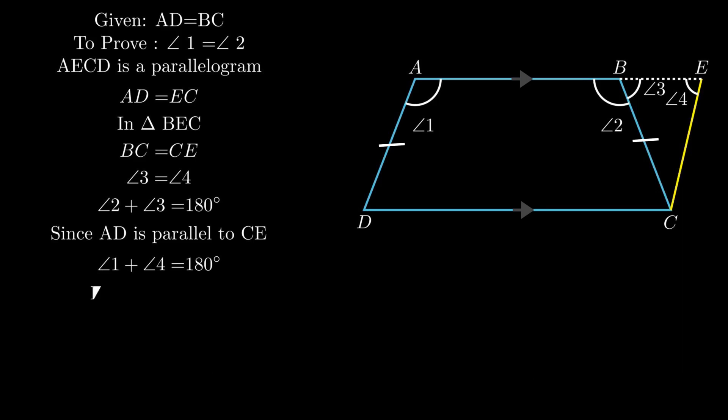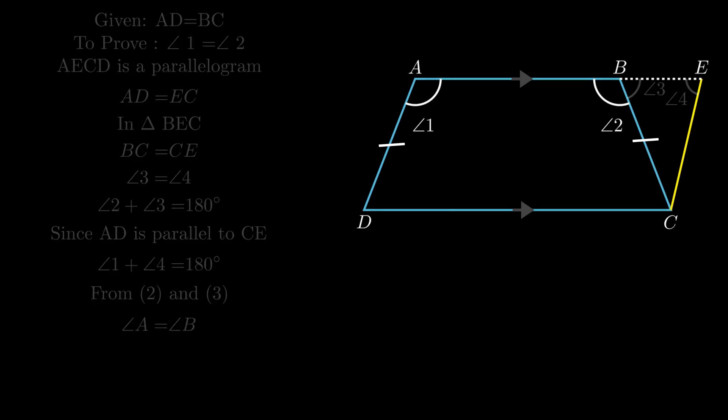Using the axiom that things equal to the same thing are equal to one another, from equation 2 and equation 3, we get angle 2 plus angle 3 equals angle 1 plus angle 4. As angle 3 equals angle 4, by cancellation law we get angle 2 equals angle 1, hence angle A equals angle B. To prove the second part, that is, angle C equals angle D.